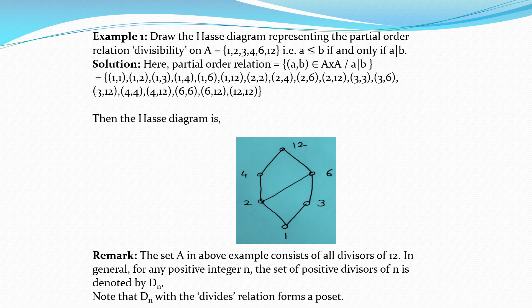Using these conventions, we draw the Hasse diagram representing the partial order relation of divisibility on the set A = {1, 2, 3, 4, 6, 12}, where A precedes B if and only if A divides B. This divisibility relation is a partial order relation on A. We write the relation in terms of ordered pairs: the relation consists of all pairs (A, B) in A × A such that A divides B.